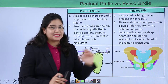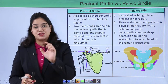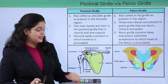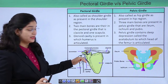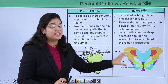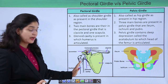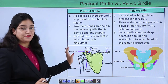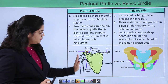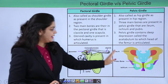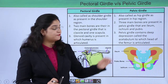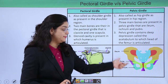Third point: what connects the appendicular skeleton to the axial skeleton. In the pectoral region, it is the glenoid cavity, which connects the limb to the girdle. In the pelvic region, it is the acetabulum, which is the part that connects the limb to the hip region.